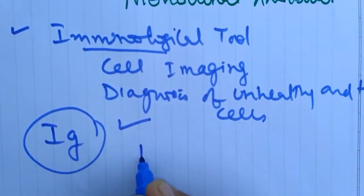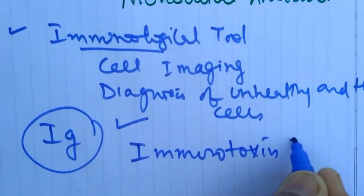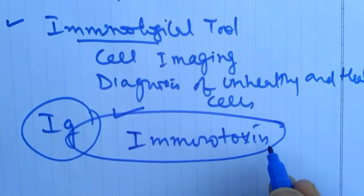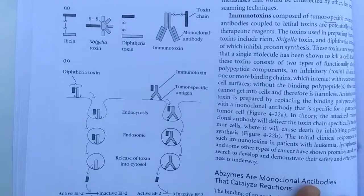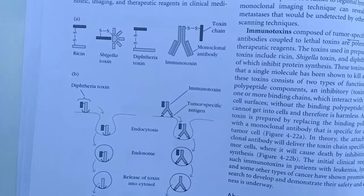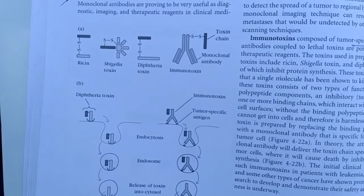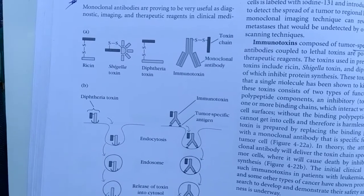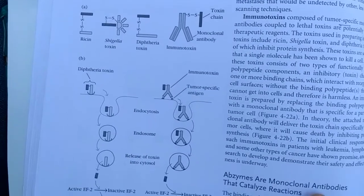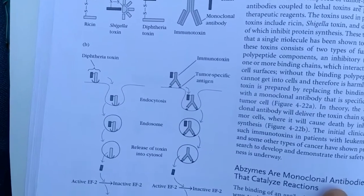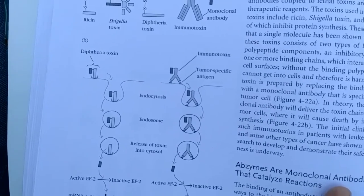Also it helps in production of immunotoxins. What are immunotoxins? Here we fix the toxin taken from a microbe and it is conjugated with the monoclonal antibody. Here is the ricin and shiga-like toxin, diphtheria toxin. These are conjugated here and it is injected in the patient.